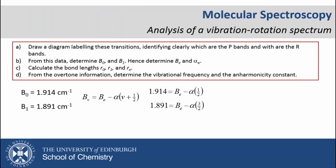We are asked to calculate Bₑ, the equilibrium rotational constant. This is given by this expression, where αₑ is a constant for each molecule. As B₀ means that V=0, and B₁ means that V=1 respectively, we can state two simultaneous equations and solve for α and hence Bₑ.